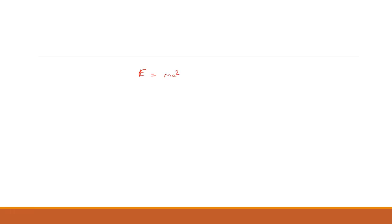Yesterday we covered Einstein's mass-energy relation, that is E equals mc squared. Also, from the variation of mass with velocity, m equals m₀ divided by the square root of 1 minus v²/c². Both of these were discussed in my previous video lectures — please go through the relativity playlist. This is equation number one and equation number two.